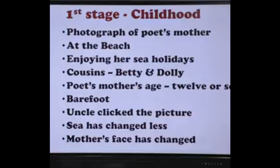This stanza tells us that there is an old photograph of the poet's mother pasted on cardboard, and it makes the poet recall the old memories of her mother's childhood. The poet is watching her mother's photograph and remembering the childhood memories. The photograph reminds her of her mother's enjoyable moments at the sea beach with her two cousins, who were younger than her. The mother was the eldest among the three cousins, and she was 12 years old then.